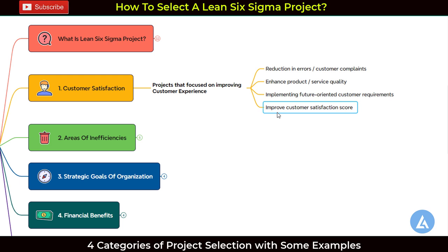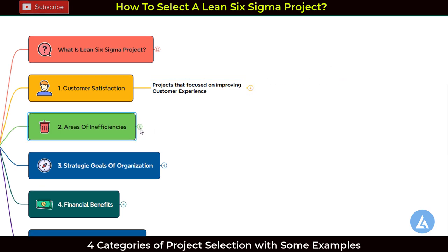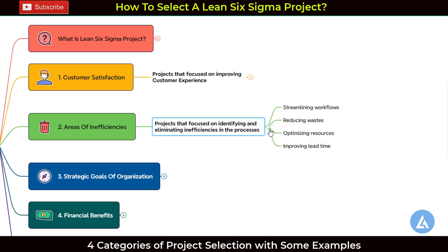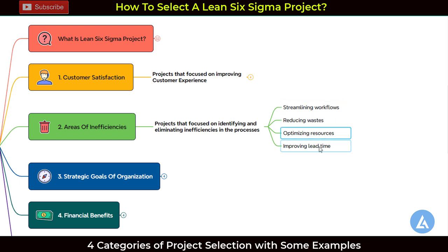The second category is about areas of inefficiencies. In this category, we take projects focused on identifying and eliminating inefficiencies in processes. Examples include streamlining workflows, reducing waste so you have smooth flow of products or services, optimizing resources, and improving lead time. The project you select must include any one of these or a combination of multiple things.